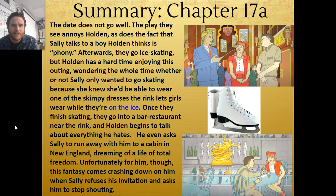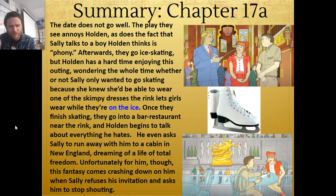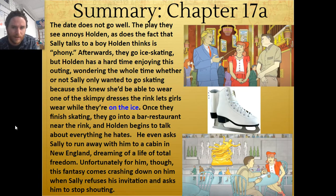In chapter 17, he has this date with Sally. It does not go well. The play that they see annoys Holden — he thinks they're all phony, as does the fact that Sally talks to a boy Holden thinks is phony. Afterwards, they go ice skating, and Holden has a hard time enjoying his outing. He keeps looking at her posterior. He thinks she's super attractive, but he's wondering the whole time whether or not Sally only wanted to go skating because she knew she'd be able to wear one of those skimpy dresses that the skating rink lets girls wear while they're on the ice.